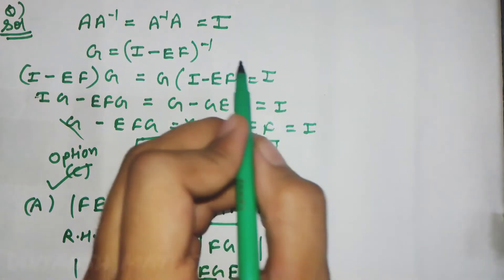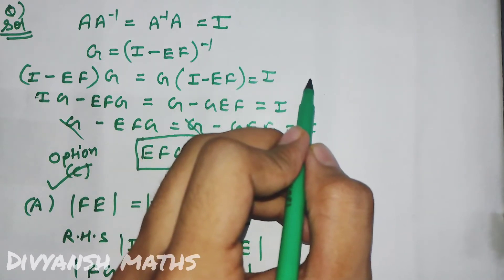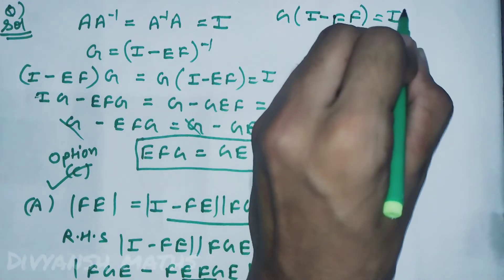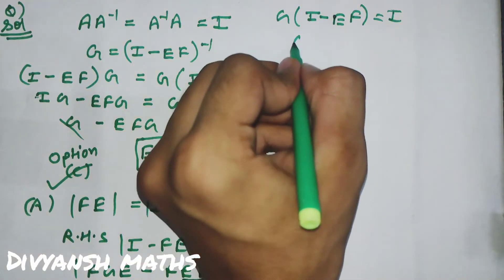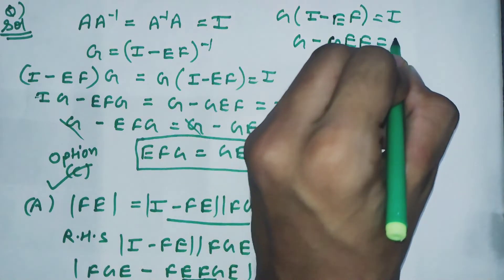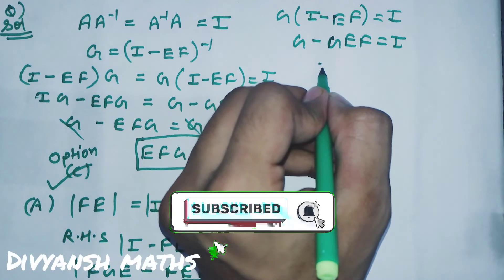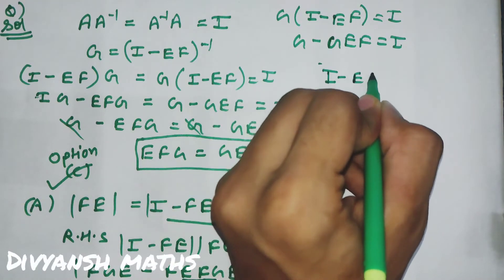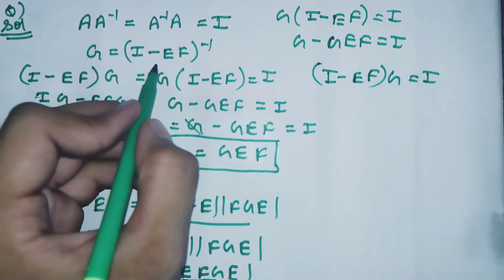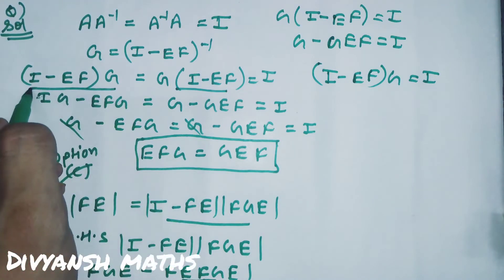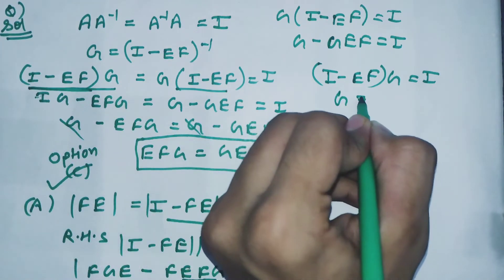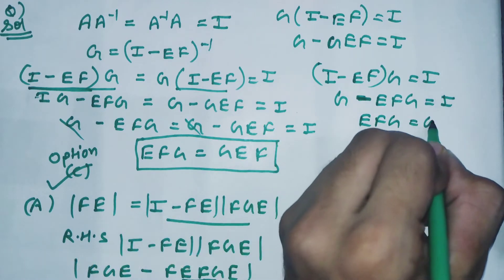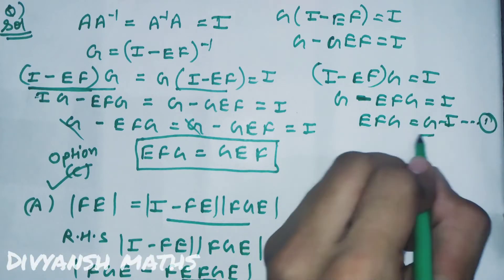EFG की value निकालनी है। पहली equation से: (I minus EF)·G = I, यानी G minus EFG = I. दूसरी equation: G·(I minus EF) = I, यानी G minus GEF = I. EFG की value के लिए: G minus EFG = I, तो EFG = G minus I. यह most important equation है।